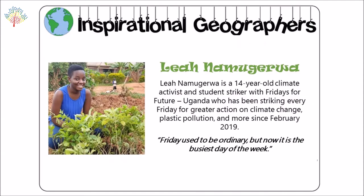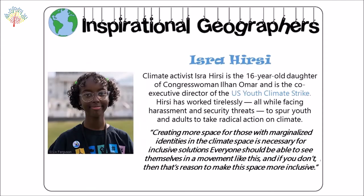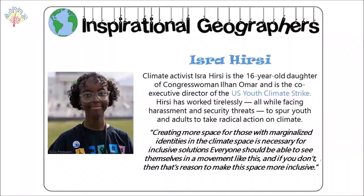Leah Namagawa is a 15-year-old activist campaigning for climate justice in Uganda. Isra Hirsi is the 16-year-old co-founder and executive director of US Youth Climate Strike. The daughter of a Somali-American refugee, Hirsi feels strongly about making room for more Muslim and black youth to be leaders in the climate movement. Creating more space for those with marginalised identities in the climate space is necessary for inclusive solutions.